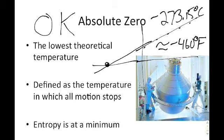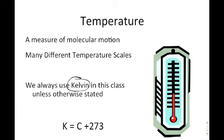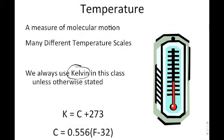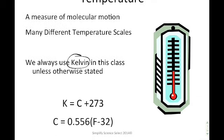You don't need to memorize those values because once you know zero Kelvin, you should be able to use the conversion formulas to convert back and forth between scales. You plug in a Fahrenheit value to get Celsius, and then plug in Celsius to get Kelvin.